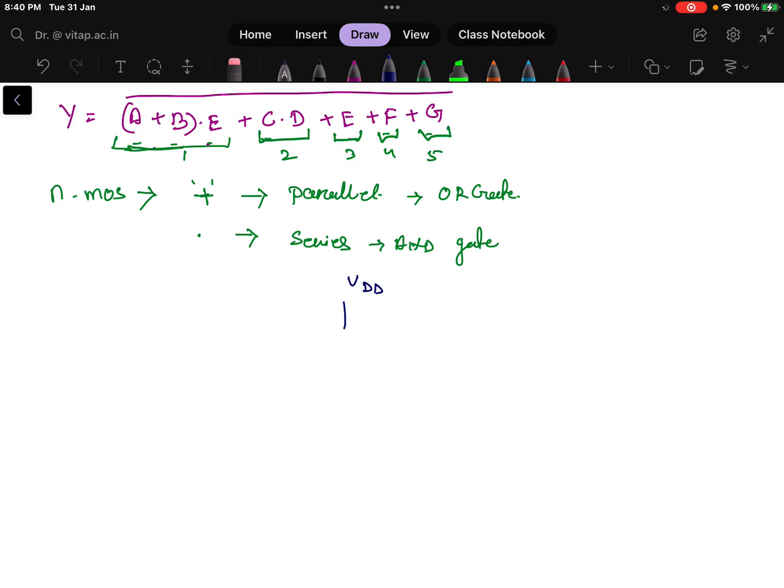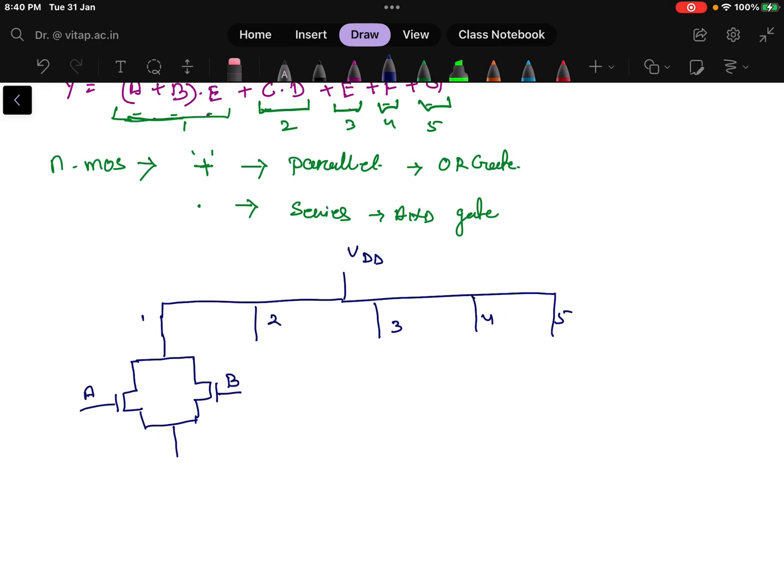There will be 1, 2, 3, 4, and 5 parallel lines because in the problem there are 5 OR gates, meaning 5 plus symbols, so 5 terms connected in parallel. First one is (A + B)·E. A + B means it is a parallel path - this is A and this is B, they are in parallel. Now A + B is in series with E, so connect one more NMOS - that will be your E here, and this will be grounded.